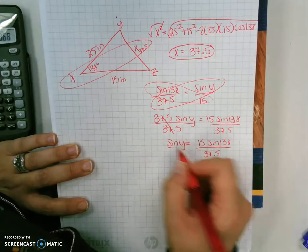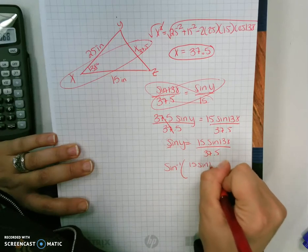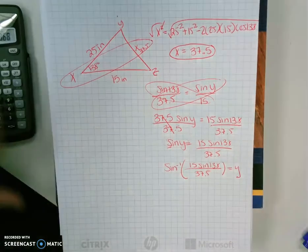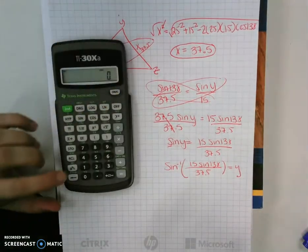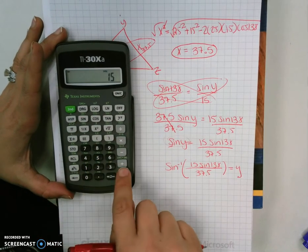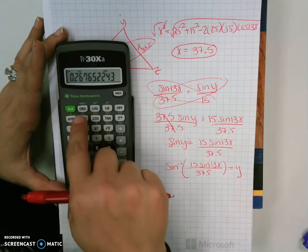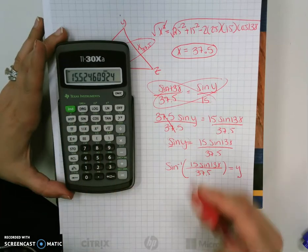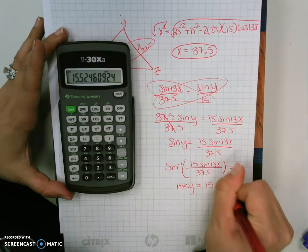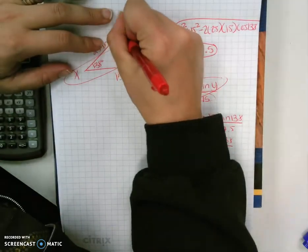And then to get rid of this, you just have to do the inverse. The inverse sine of 15 sine 138 all over 37.5 equals Y. So 138 sine times 15 equals divided by 37.5 equals second sine. And I got that the measure of angle Y is approximately 15.5 degrees.